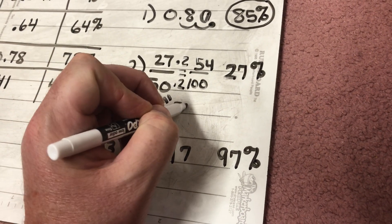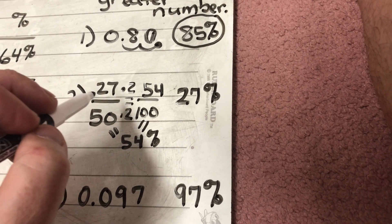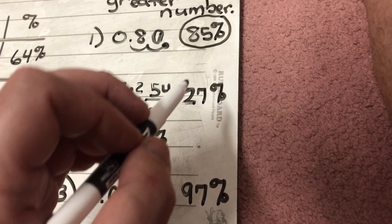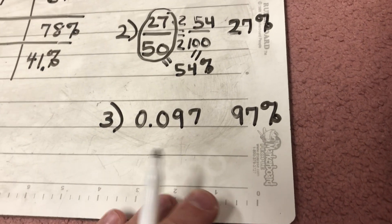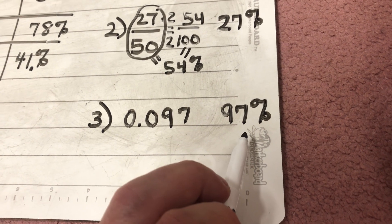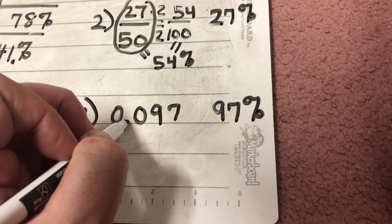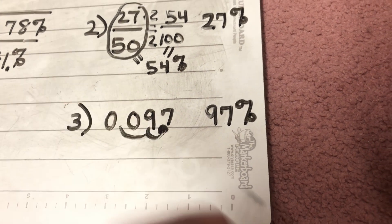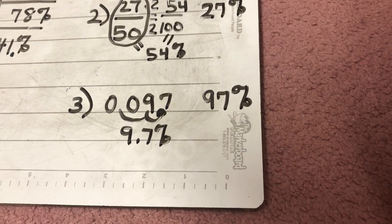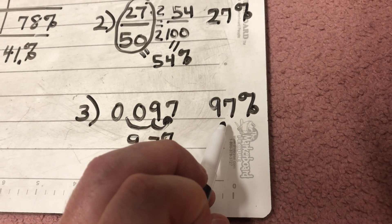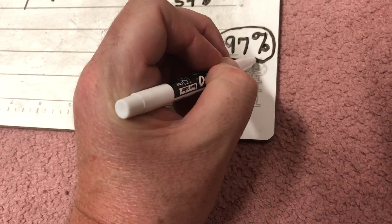54 over 100 equals 54 percent, so 27 over 50 is equivalent to 54 percent — which is greater than 27 percent. I circle 27 over 50. The last one: 97 thousandths or 97 percent — which is bigger? I turn the decimal into a percent by moving it twice to the right, getting 9.7 percent. That is not as big as 97 percent, so 97 percent is the bigger number and that's the one I circle.